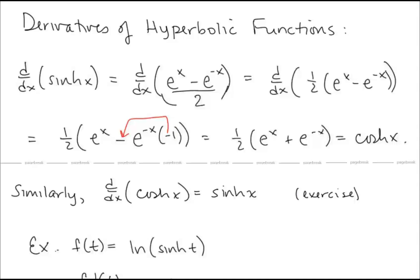Now let's look at derivatives of hyperbolic functions. By definition, d/dx[sinh(x)] = d/dx[(eˣ − e⁻ˣ)/2]. Pulling out 1/2 and differentiating, we get (1/2)(eˣ − (e⁻ˣ)(−1)) = (1/2)(eˣ + e⁻ˣ), which is exactly the definition of cosh(x). So d/dx[sinh(x)] = cosh(x). Similarly, d/dx[cosh(x)] = sinh(x) — notice there is no negative sign, unlike with the trig functions.